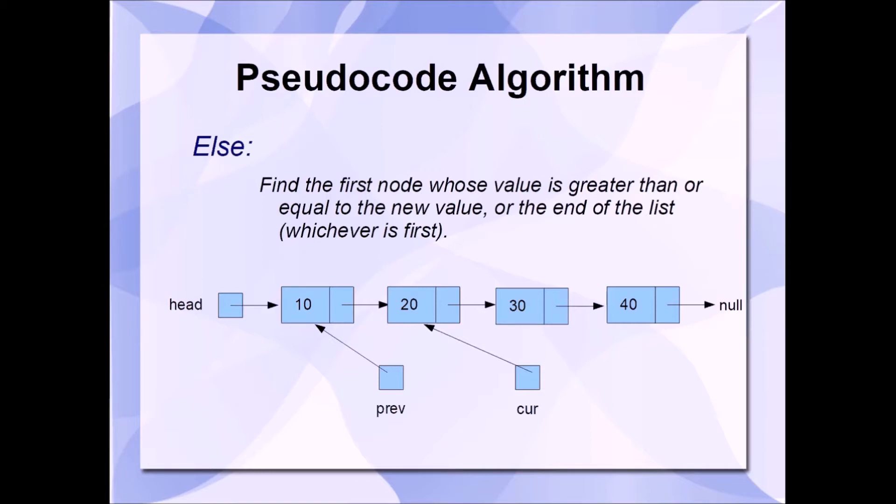and so long as curr's node has a value that's less than our new node's value. Let's go ahead and see how this works. Let's assume that we want to insert a new value that is 35.